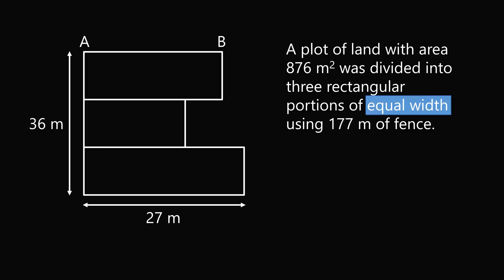The three rectangular portions have equal width. We know the total width is equal to 36 meters and each of these three widths will be equal to each other. So each of them will be equal to 36 over 3 which is equal to 12 meters each.